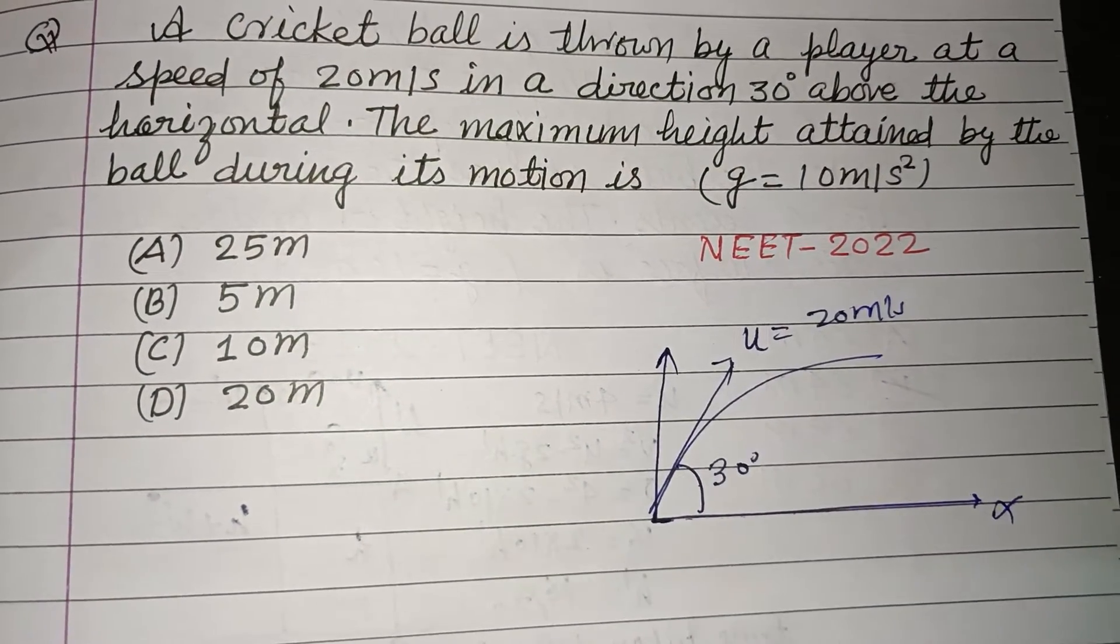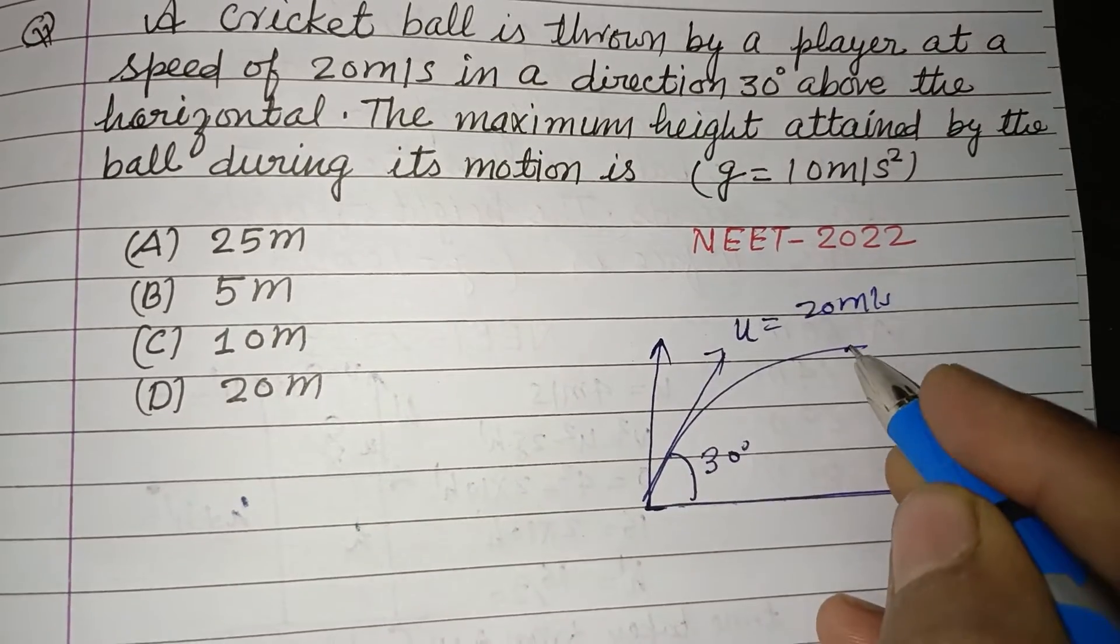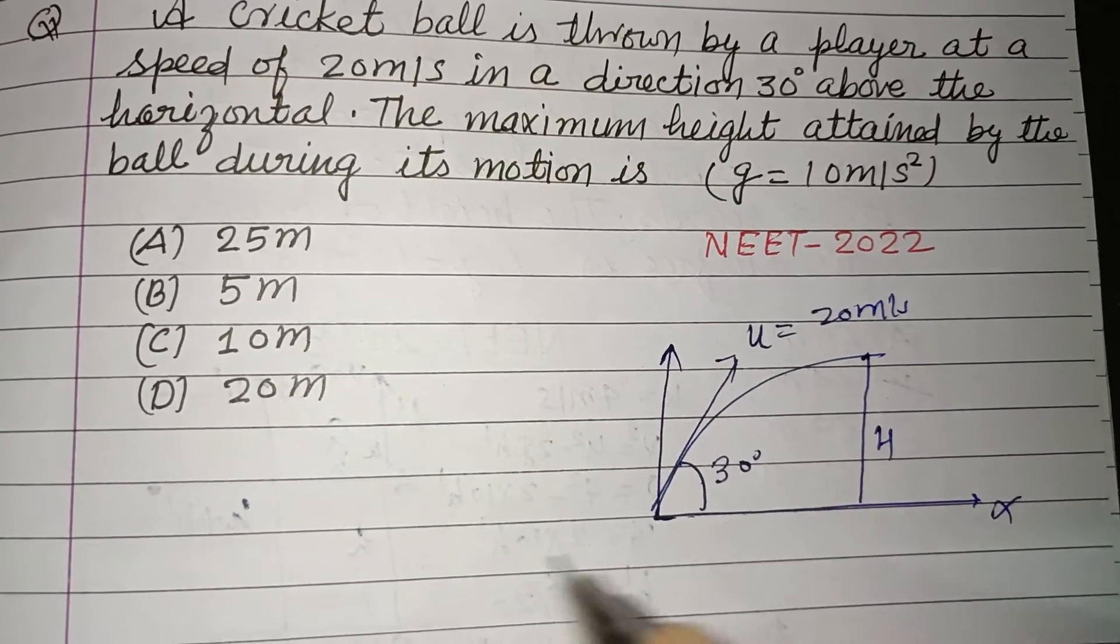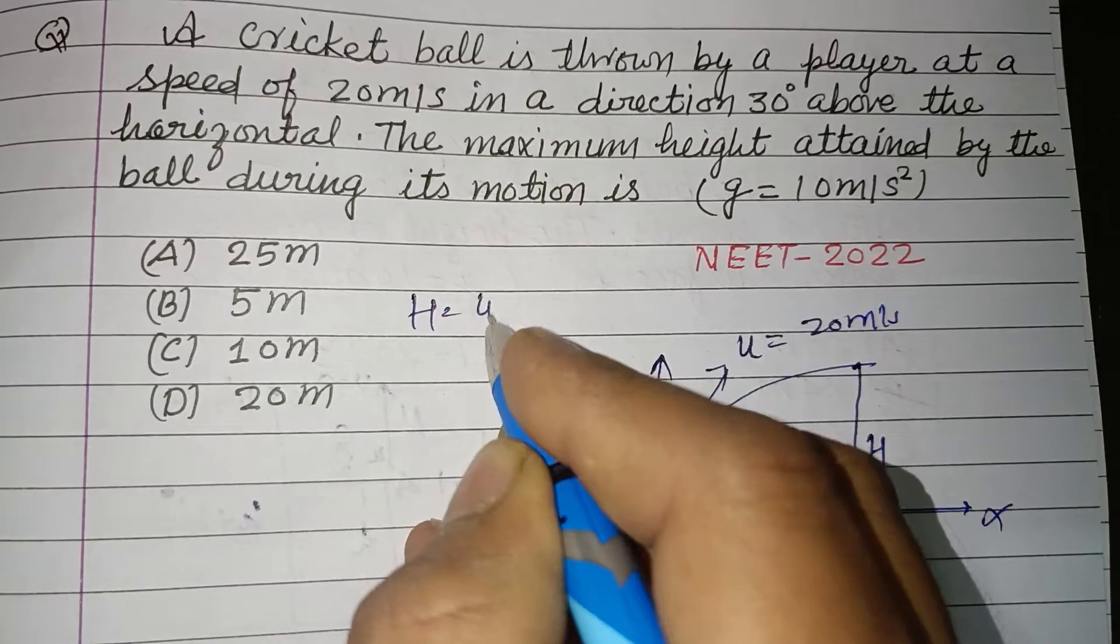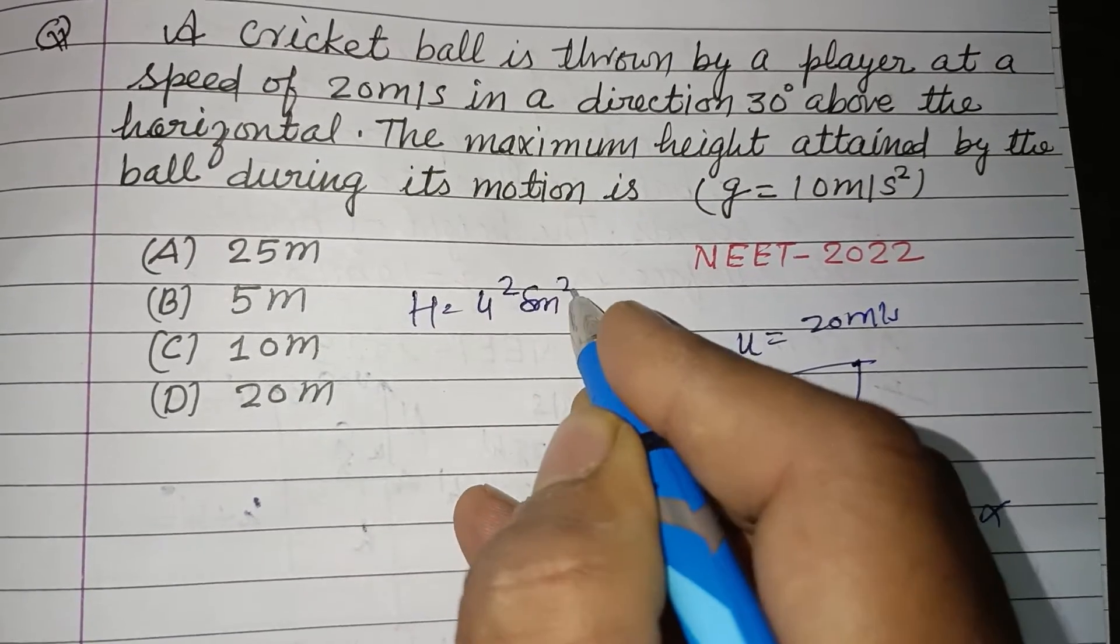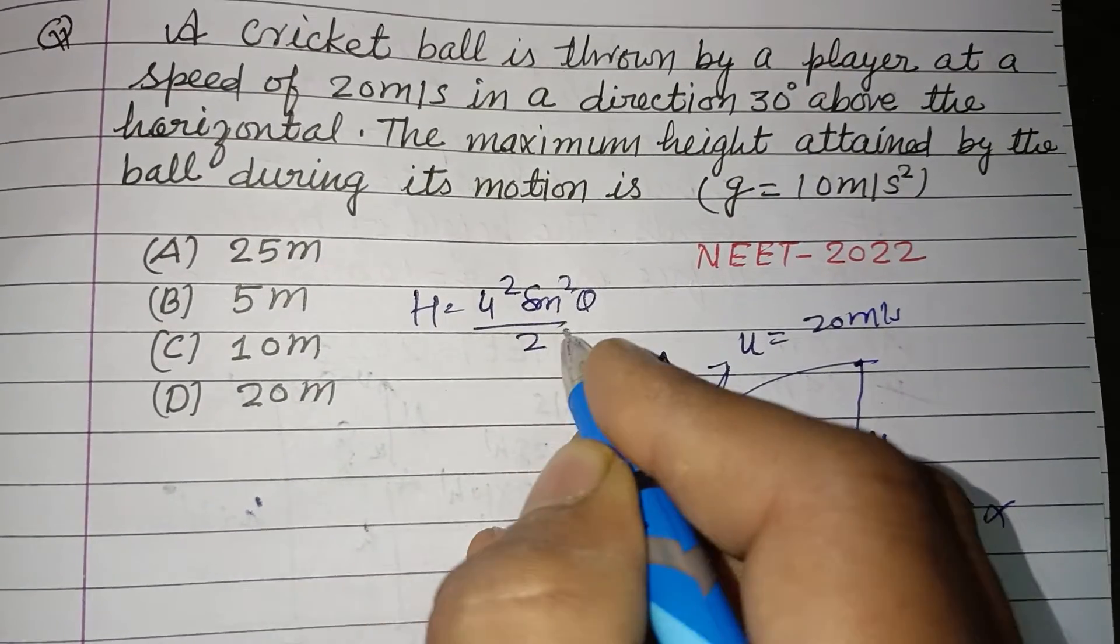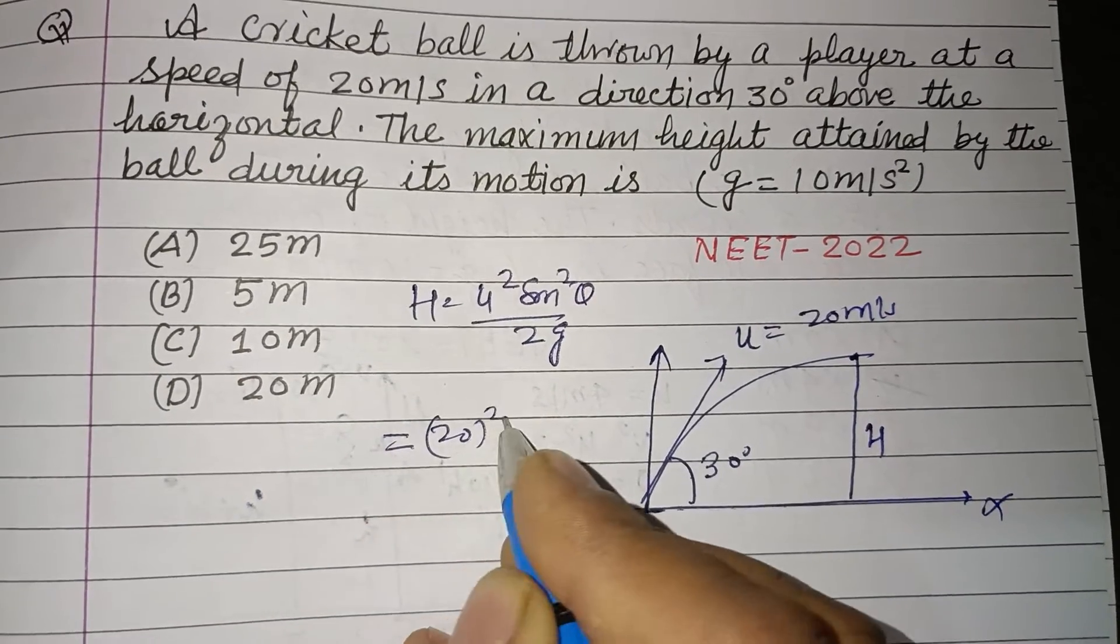So maximum height attained, this is H. So H equals u squared sine squared theta upon 2g. So u is given to us as 20 meter per second.